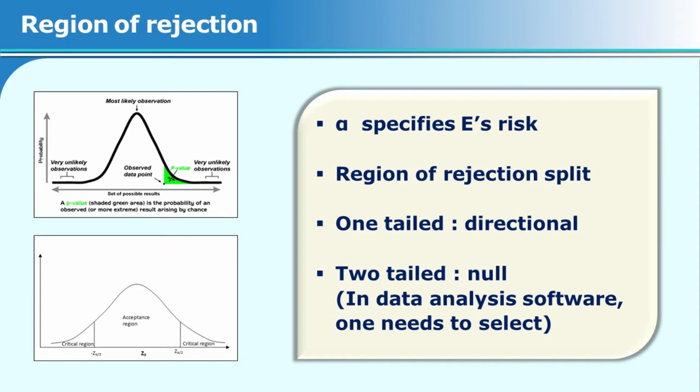For a simple test like a t-test, it is very important when looking up the table whether you are looking up a one-tailed or a two-tailed value. Very often we use software for statistical analysis, and the software requires you to specify where your region of rejection lies — it should not be left to chance, otherwise you will not understand the meaning of your own data. Always make a very wise and reasoned choice of where your region of rejection lies.